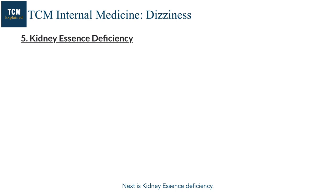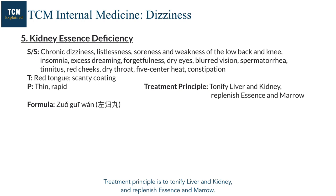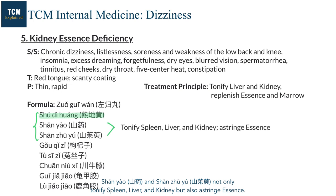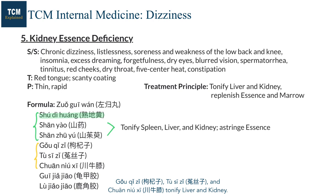Next is kidney essence deficiency. The treatment principle is to tonify the liver and kidney and replenish essence and marrow. We can consider using Zuo Gui Wan. Shu Di Huang, Shan Yao, and Shan Zhu Yu are the yin-tonifying herbs in Liu Wei Di Huang Wan. Shu Di Huang is the key herb that replenishes essence. Shan Yao and Shan Zhu Yu not only tonify the spleen, liver, and kidney, but also astringe essence. Gou Qi Zi, Tu Si Zi, and Chuan Niu Xi tonify the liver and kidney. Gou Qi Zi focuses on the eyes.